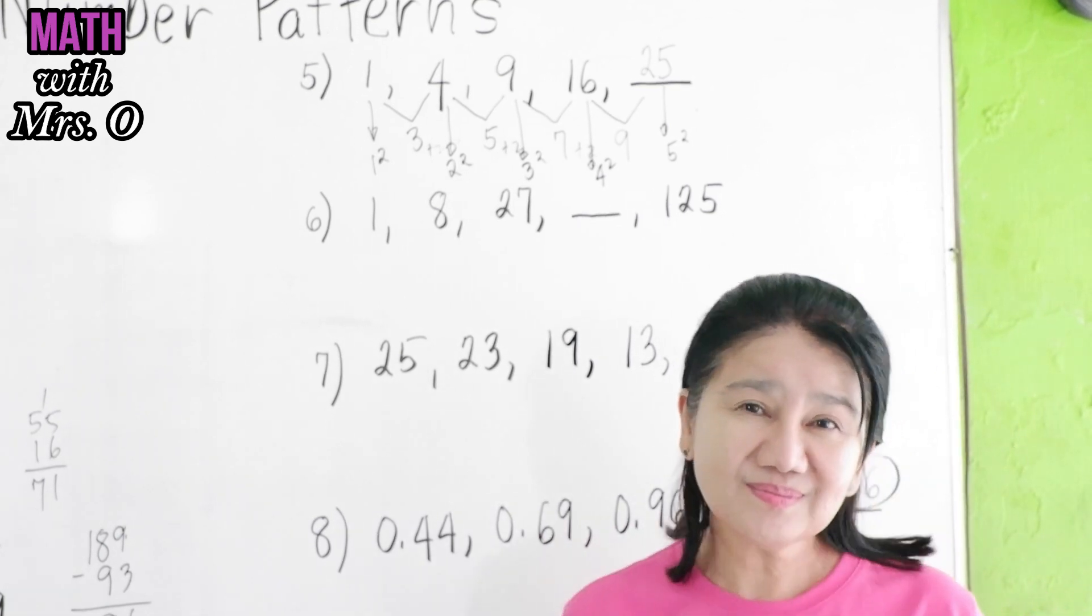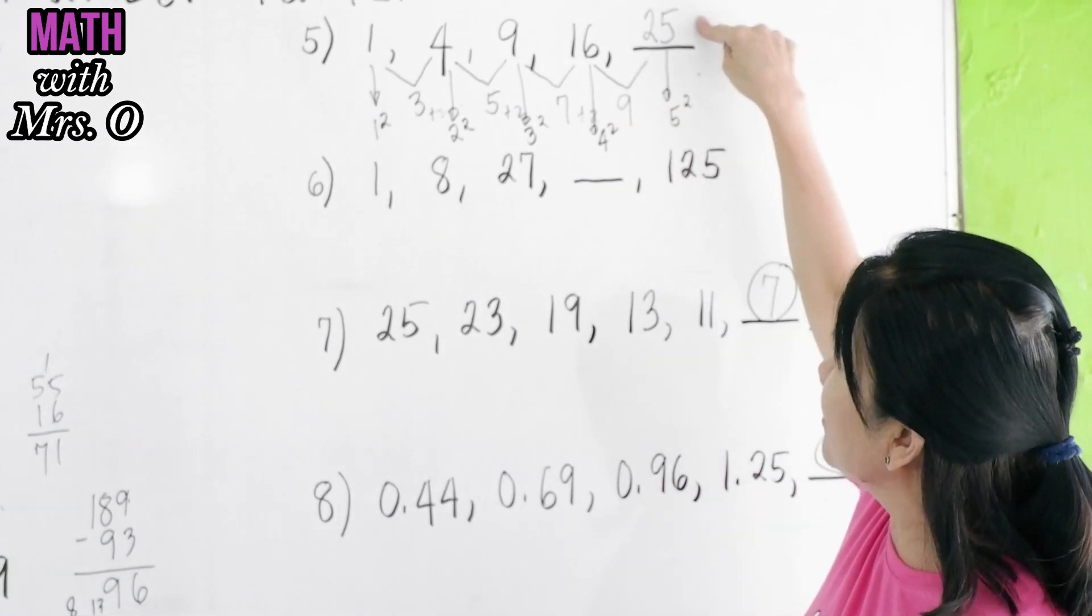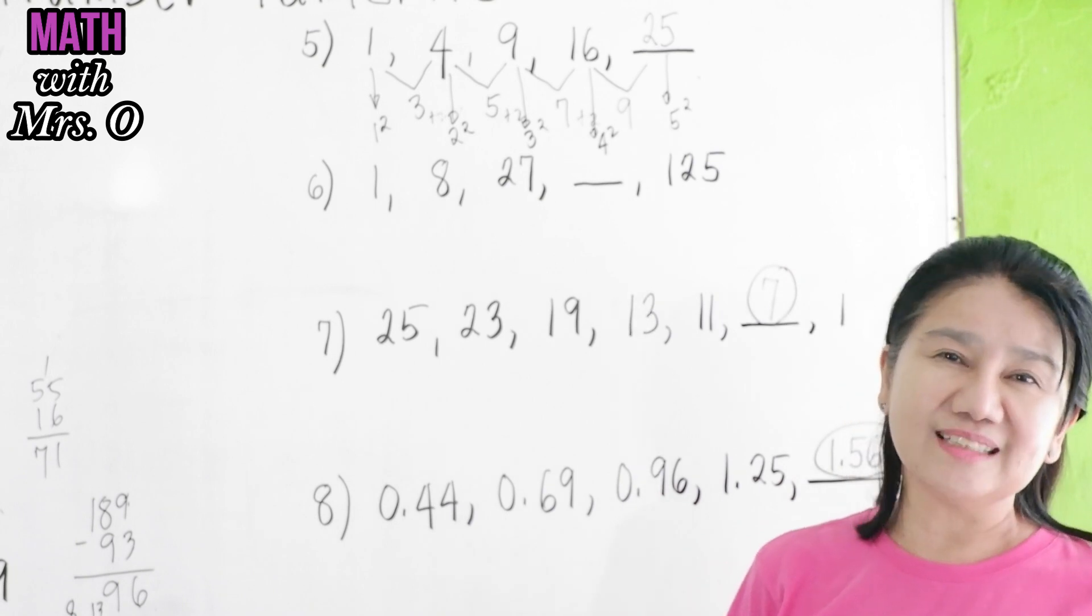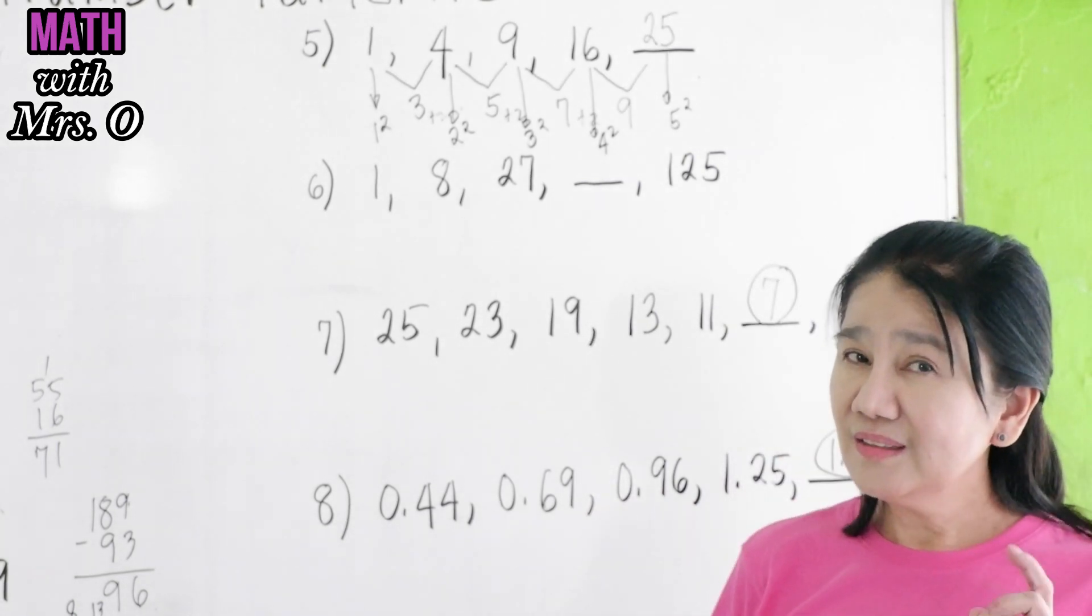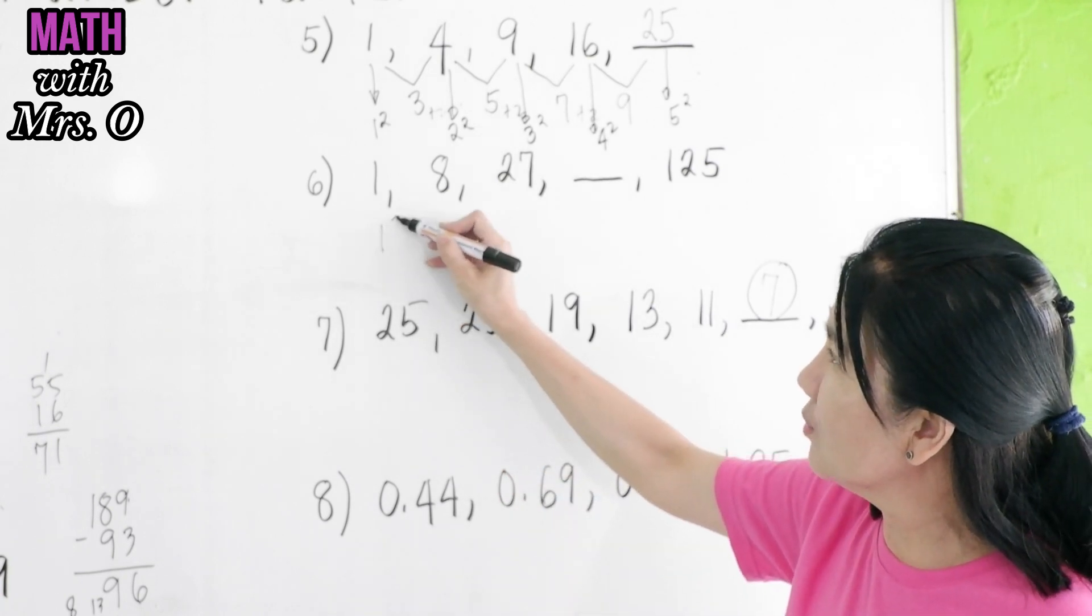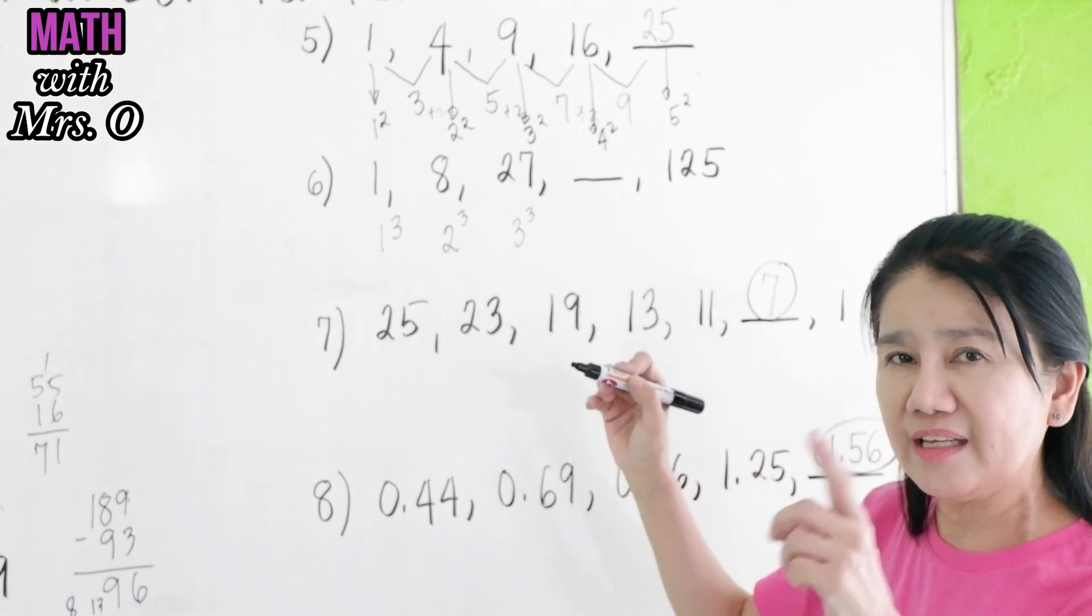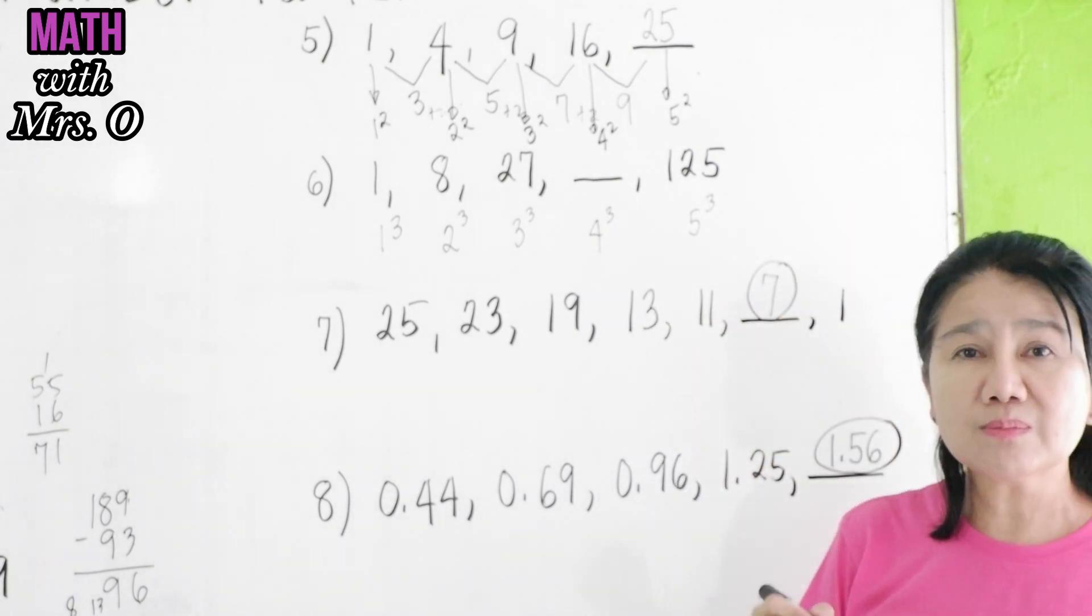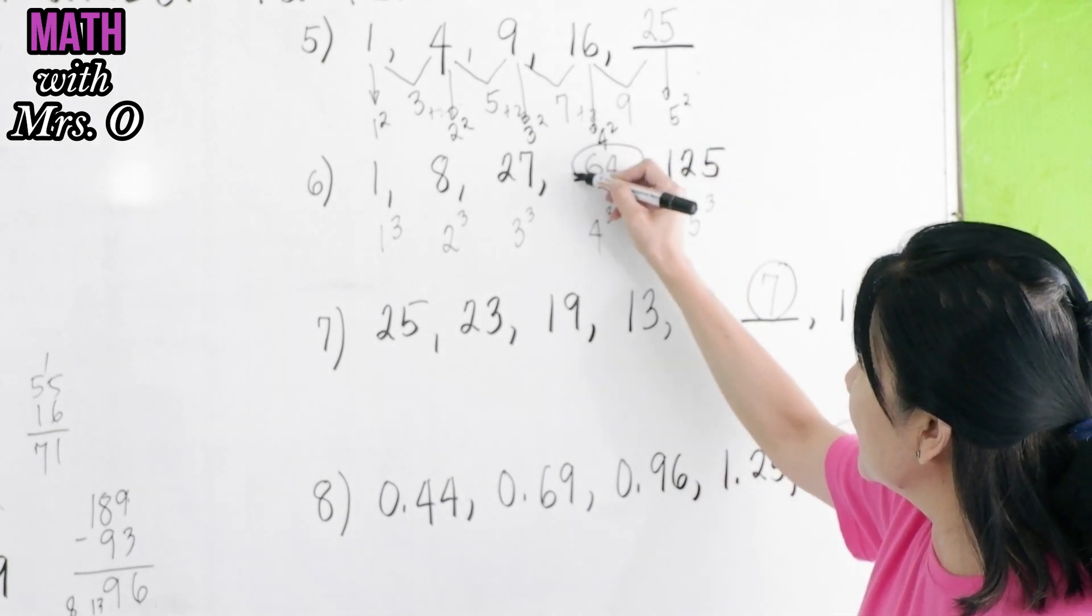In the next problem, if you see that these are squares, what about the series of numbers here? Did you see that they are the cube of the consecutive whole numbers? 1 is 1 cubed. 8 is 2 cubed. 27 is 3 cubed. So what is this? 4 cubed. Is this 5 cubed? 5 times 5, 25 times 5 is 125. So therefore, we have here 4 times 4, 16 times 4 is 64. So the answer is 64.